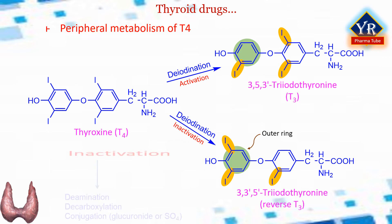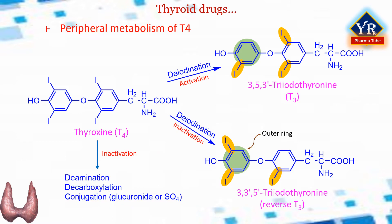Drugs such as amiodarone, iodinated contrast media, beta blockers, and corticosteroids, as well as severe illness or starvation, inhibit the 5-deiodinase necessary for the conversion of T4 to T3, resulting in low T3 and high reverse T3 levels in the serum. A polymorphism in the D2 gene can reduce T3 activation and impair thyroid hormone response.